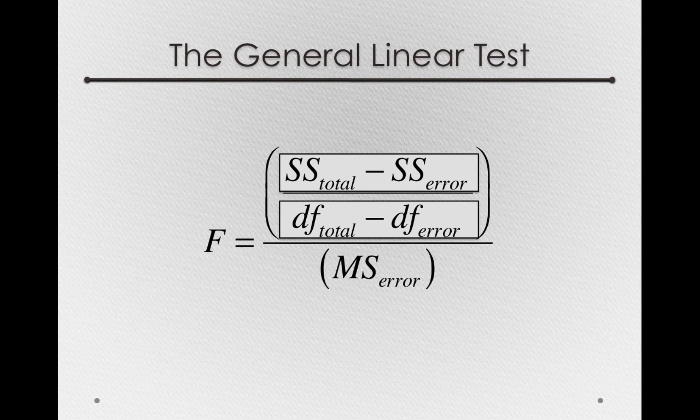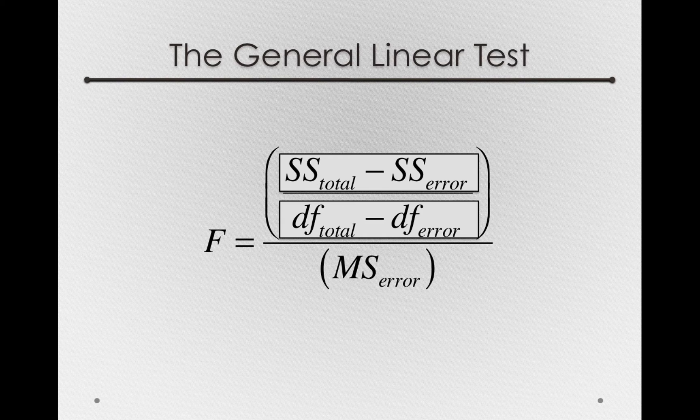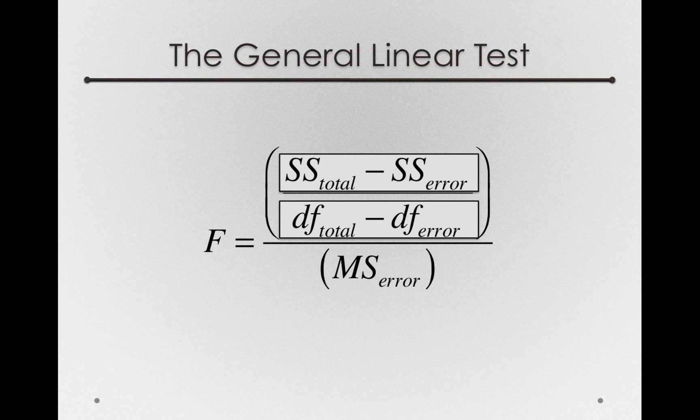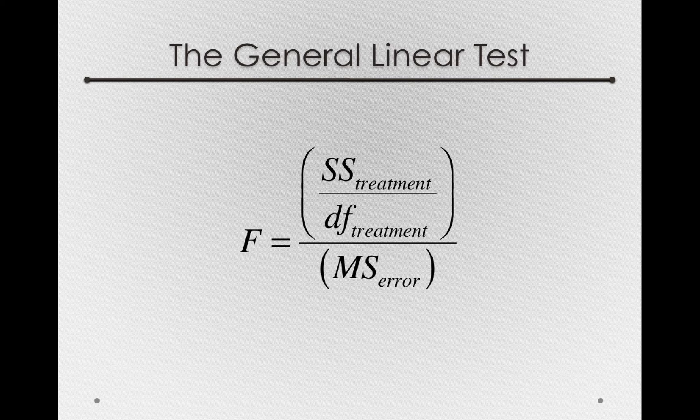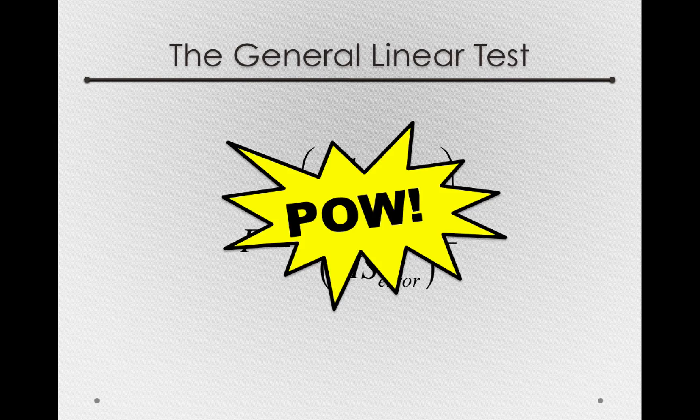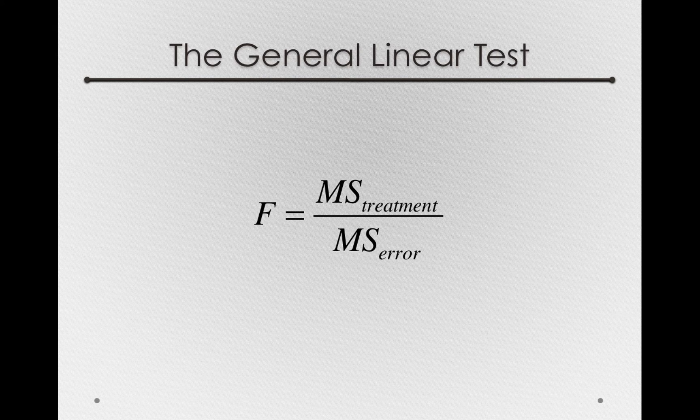And so in this model, we have sums of squares total and sums of squares error, degrees of freedom total and degrees of freedom error. The only possible difference between these two, the sums of squares for treatment and the degrees of freedom for treatment. So in one fell swoop, we actually get back to the mean square for treatment and the mean square for error.